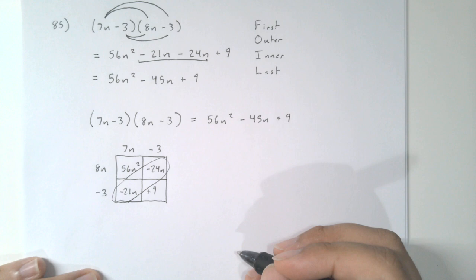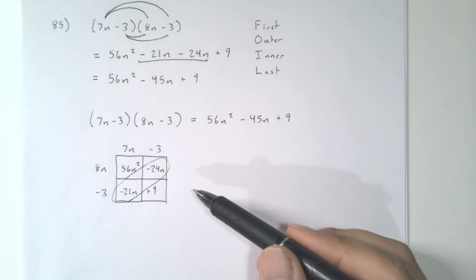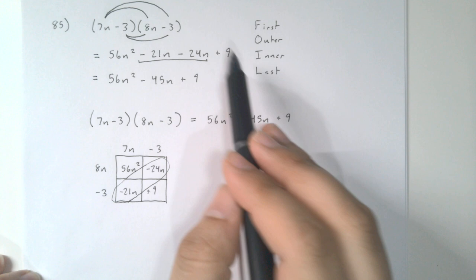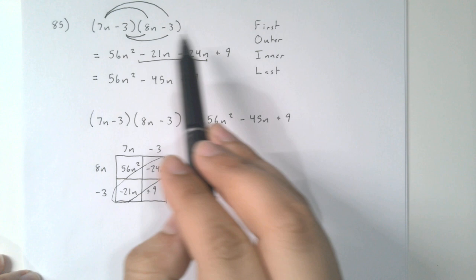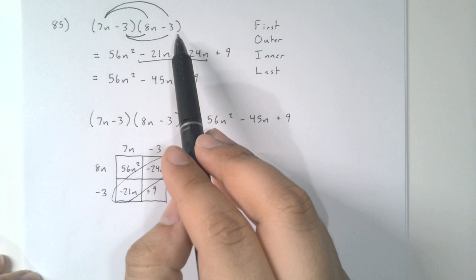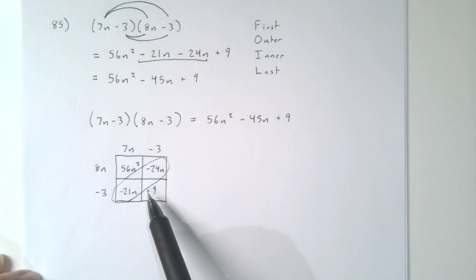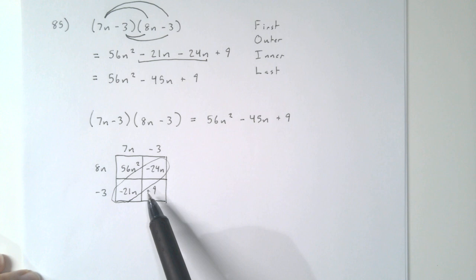There's nothing wrong with either approach. The reason I advocate for the box method is because when we start multiplying larger and larger polynomials, it can get out of hand with the amount of things you have to remember to multiply together. I'm not aware of any acronym for, say, a trinomial times a trinomial — a 3 by 3 situation. The box ensures that you have all of your terms multiplied together and don't miss any of them.